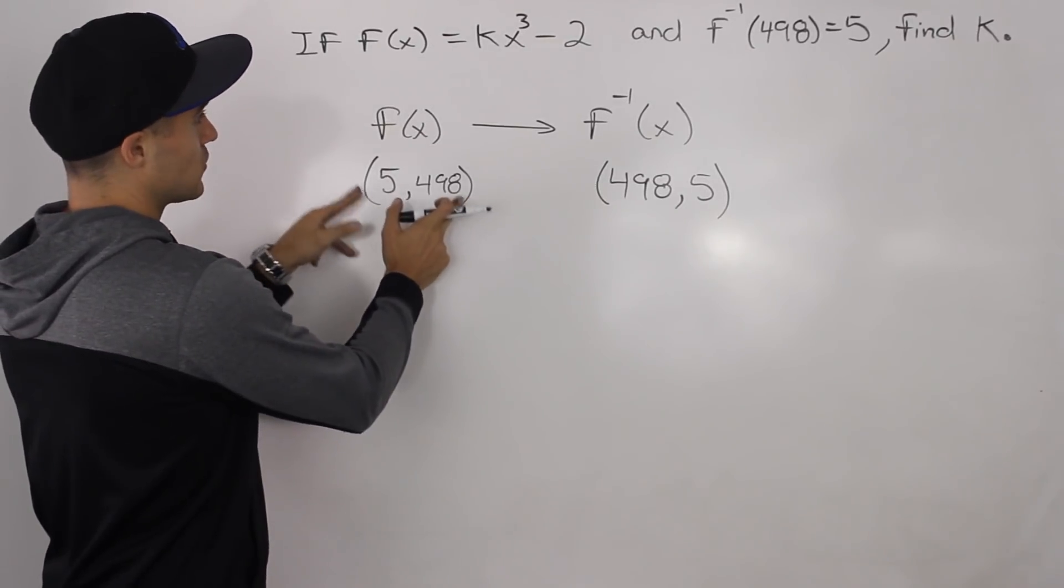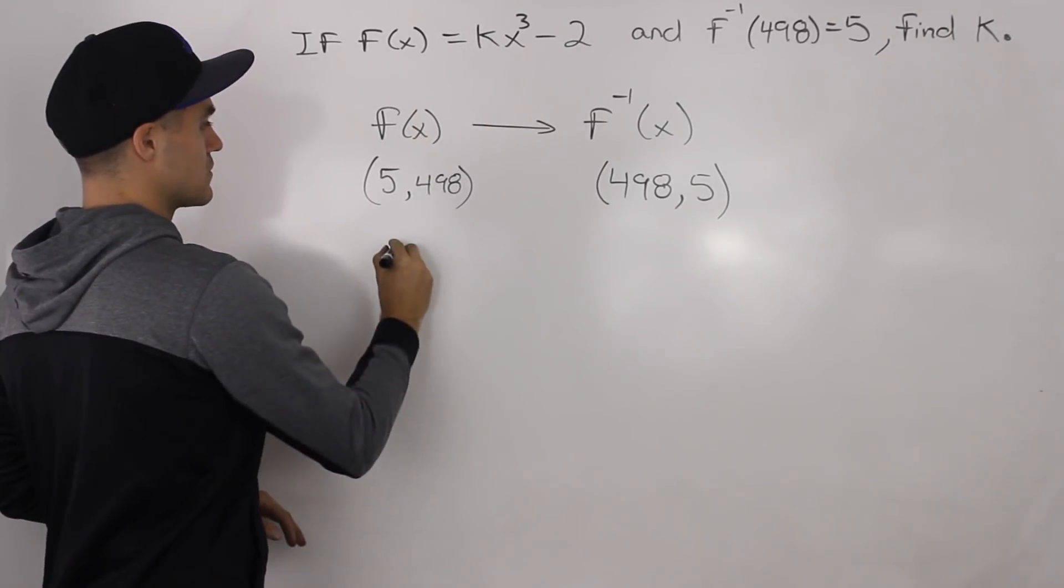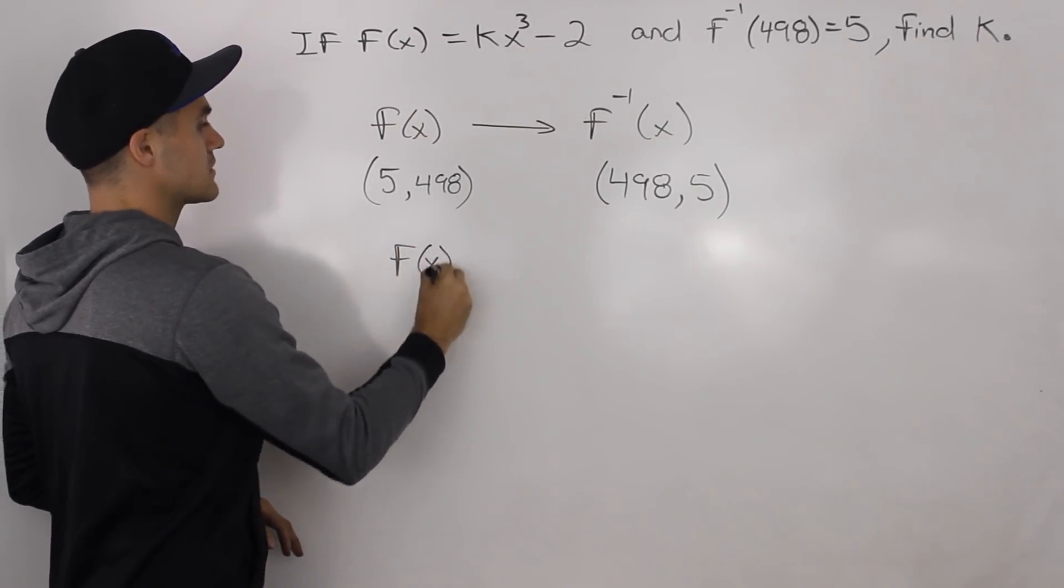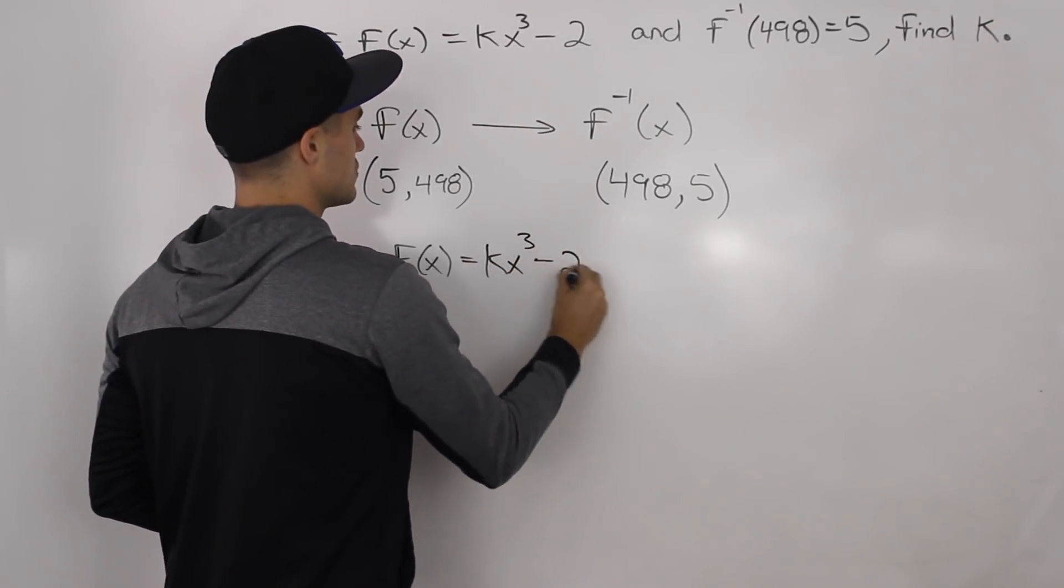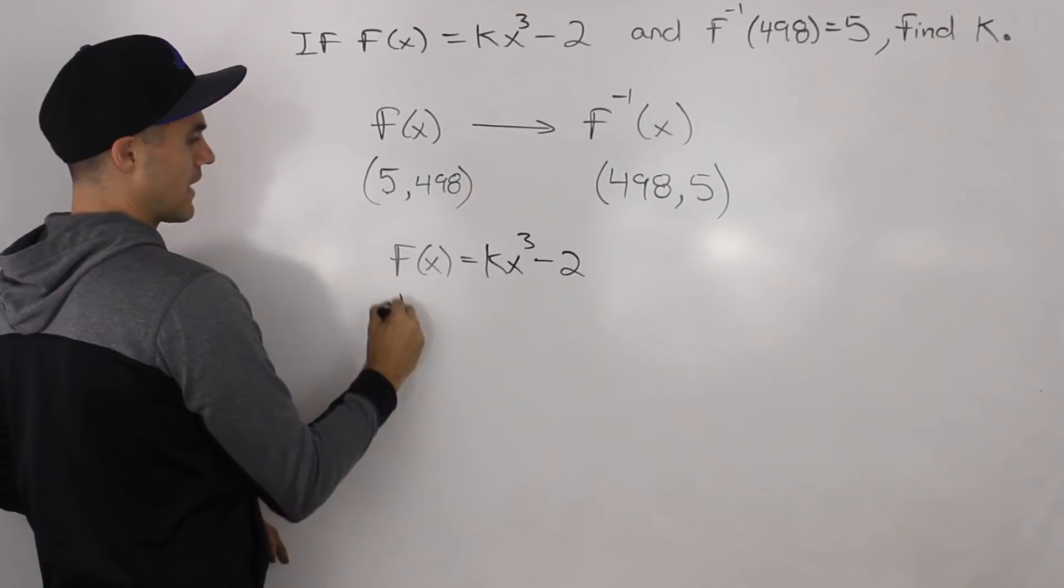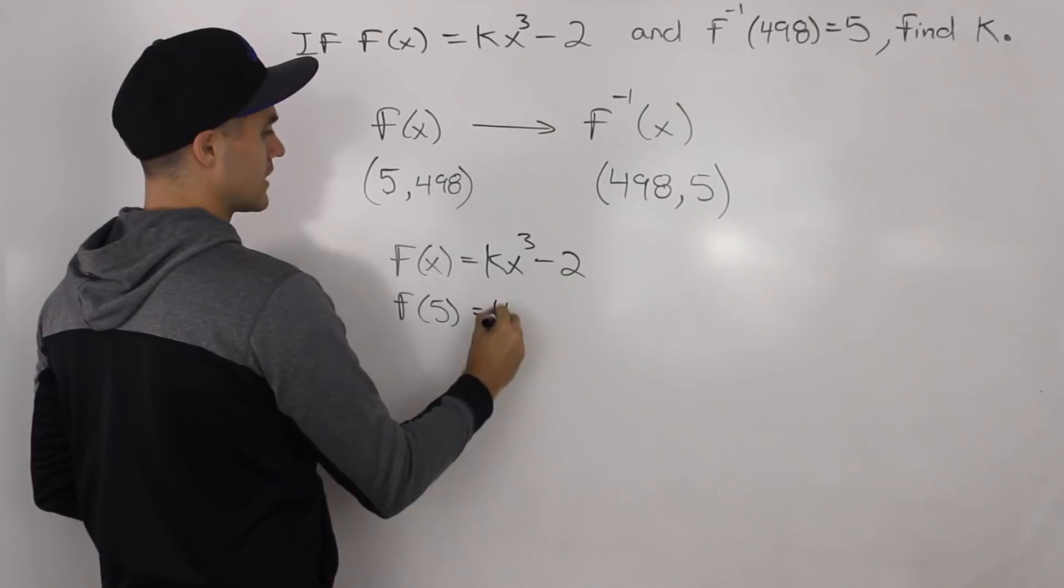And now we can use this coordinate and this function that we're given to solve for k. So if f(x) equals k x cubed minus 2, we know that f(5) equals 498.